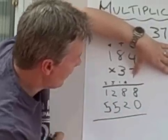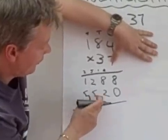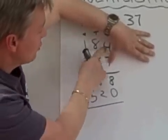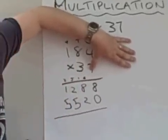So, what I've got now is 5,520 is the answer to 184 times 30.